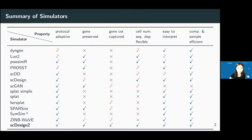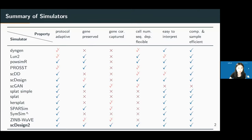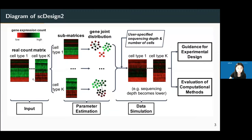There are many simulators that have been developed in the field. We summarize ideal properties of simulators in six aspects: being adaptive to different protocols, preserving genes, capturing gene correlations, allowing cell number and sequencing depth to vary, being easy to interpret, and being computationally efficient. Most existing simulators do not satisfy the gene correlation property, and a majority cannot allow cell number or sequencing depth to vary. Motivated by this, we developed SC Design 2 to satisfy all six properties.